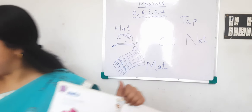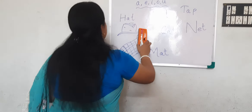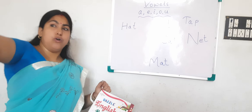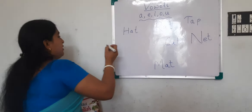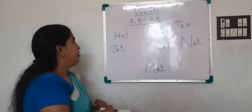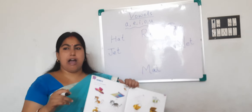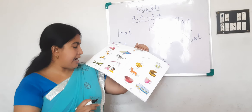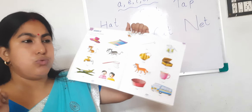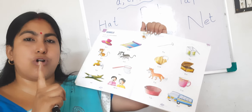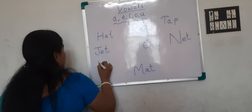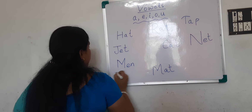J-E-T — jet. What is the next picture? It's a jet. It flies over your head in the sky. J-E-T, jet. It is a flying aircraft. And then, there are pictures of two men. M-E-N — men.